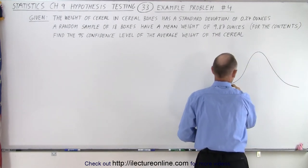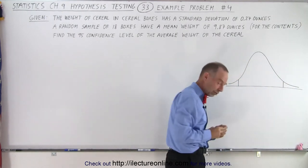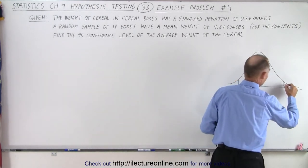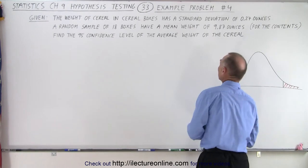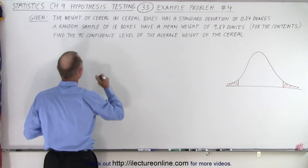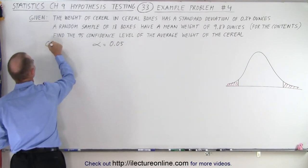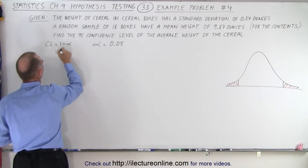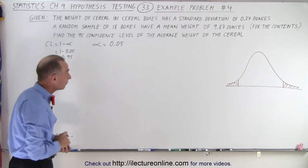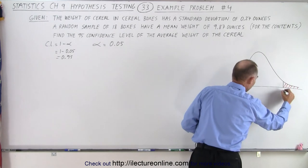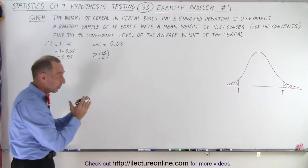We have a random distribution of all the cereal boxes. We're going to have a region called the critical region based upon the level of confidence chosen — an upper critical region and a lower critical region, with boundaries. We're dealing with a 95% confidence level, so the level of significance is equal to 0.05, because the confidence level equals 1 minus the level of significance: 1 minus 0.05 equals 0.95. We have a level of significance of 0.05.